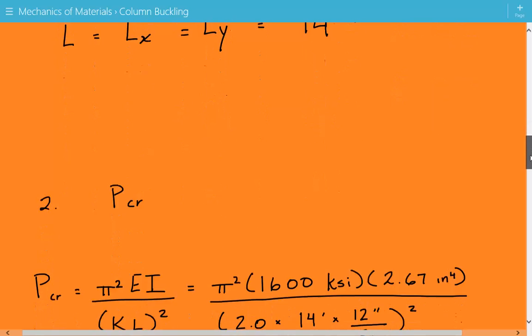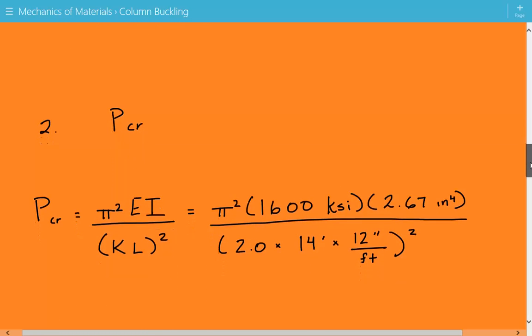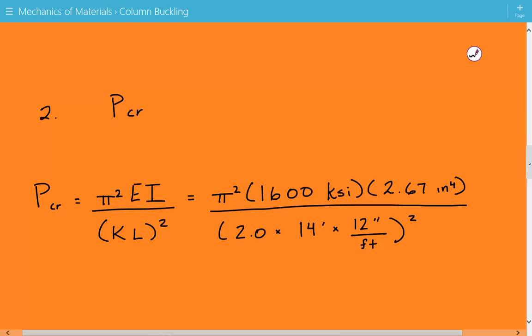Now we calculate the critical buckling load using the Euler buckling formula: Pcr = π²EI/(KL)². So π² times 1600 ksi times the moment of inertia. We use the least moment of inertia, which gives the smallest critical buckling load. That's Iy = 2.67, divided by the effective length. K equals 2.0 times the unbraced length of 14 feet, converted to inches, squared.